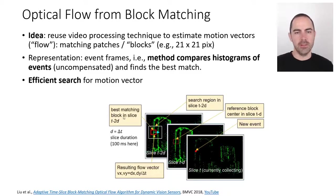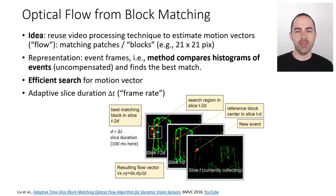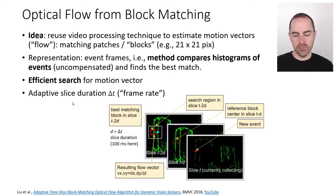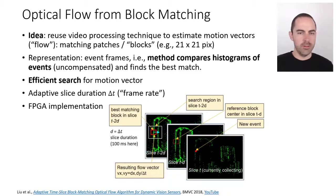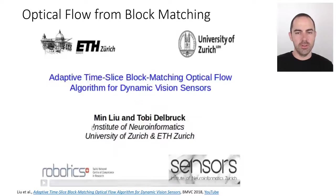The search is efficient because it's restricted to a small area around the current block. The paper proposes an adapted slice duration — an adaptive frame rate — that handles both slow and fast motions. The algorithm has been implemented on FPGA.